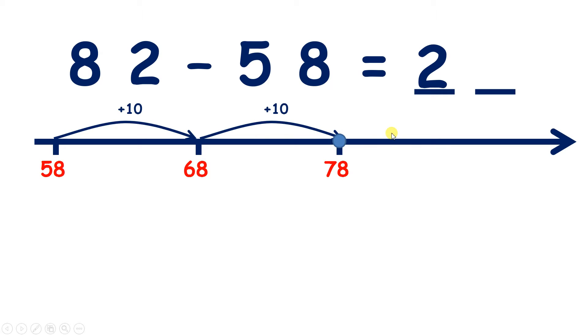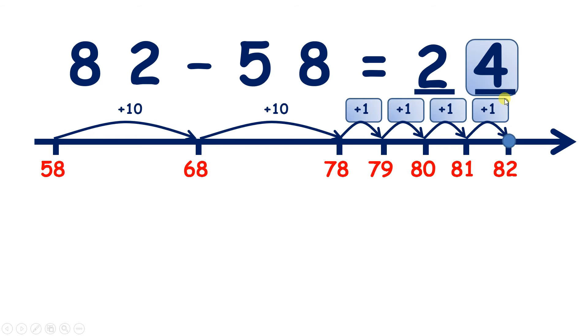And now we can count on from 78, 79, 80, 81, and now we get to 82. So we've counted on four units and that makes our answer 24. So how could you do 82 minus 58 in fewer steps?